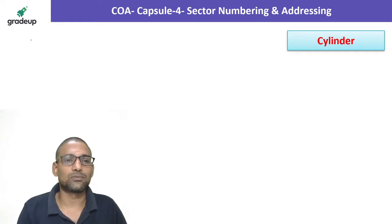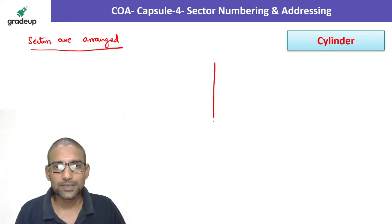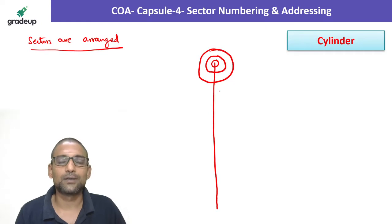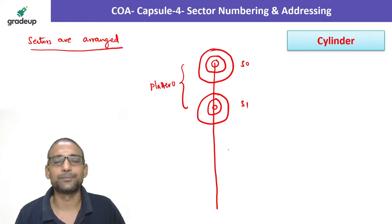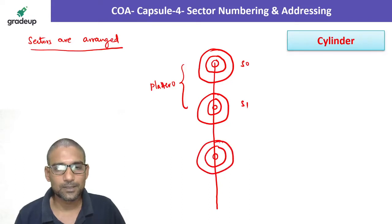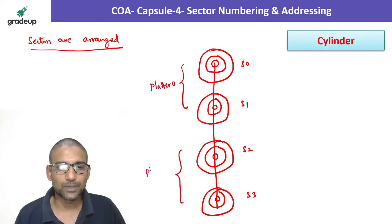How these sectors are aligned or arranged? Suppose this is the spindle. Assume there are two platters. Each platter is having two surfaces. This is surface number 0, this is surface number 1. These two together is first platter, platter number 0. Similarly, this is surface number 2, this is surface number 3. These two together is platter number 1.